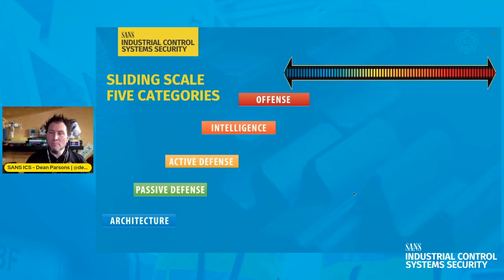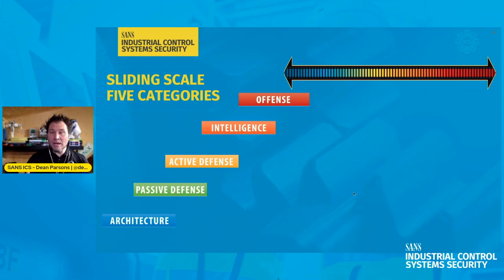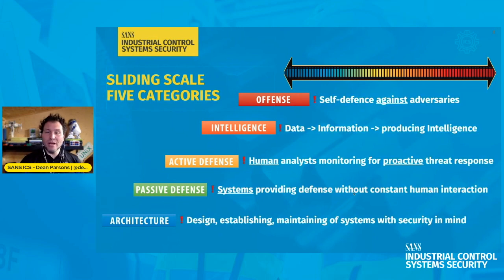The sliding scale of cybersecurity has five categories, and each of them have different return on investment with regards to your investments and what you get from a security perspective. At the bottom of the list we have architecture, followed by passive defense, then active defense, intelligence, and offense as well.